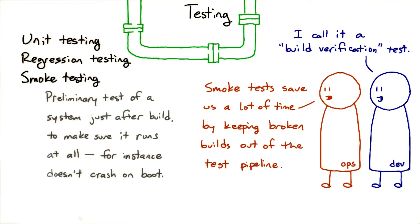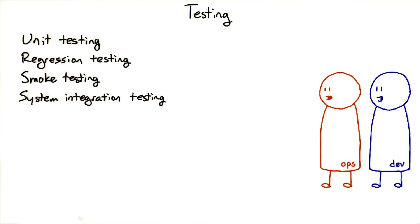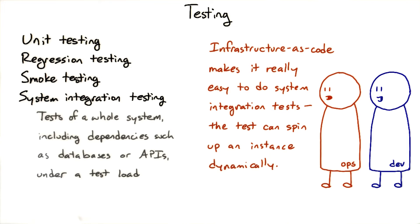It also has an older meaning in plumbing as a test for newly installed pipes. Before putting water in a pipe, plumbers would fill it with pressurized smoke to see if the smoke leaked out anywhere. A system integration test is just a little bigger — it's a test of the system including not just our code, but also the back ends and dependencies and data that our code makes use of. You might often run it on dedicated test machines.